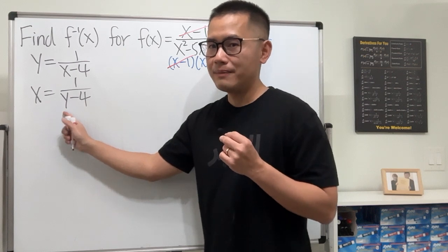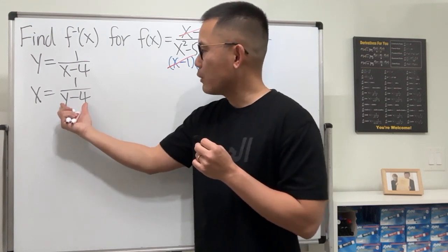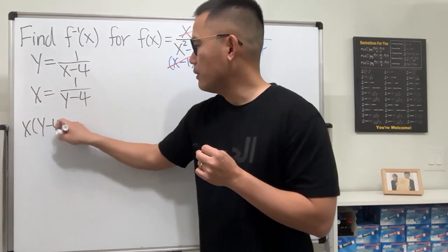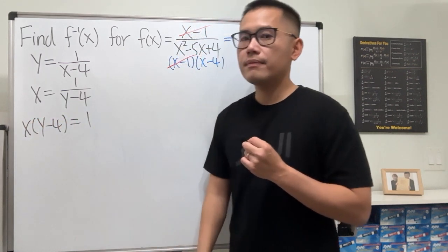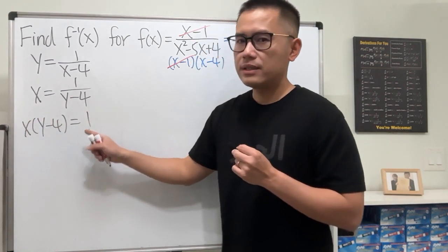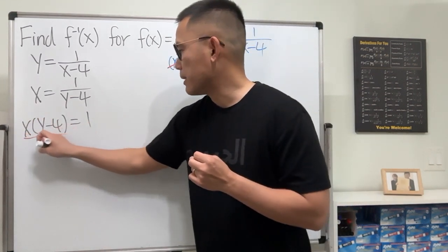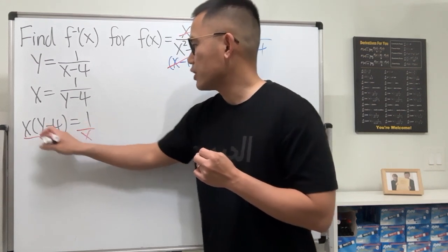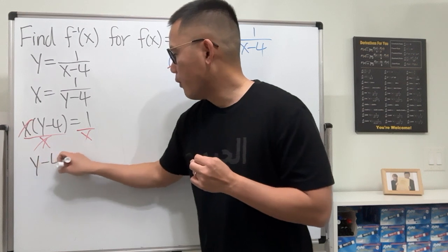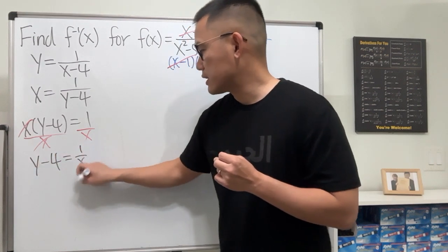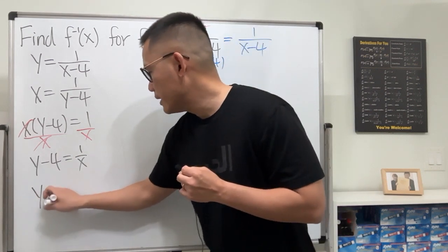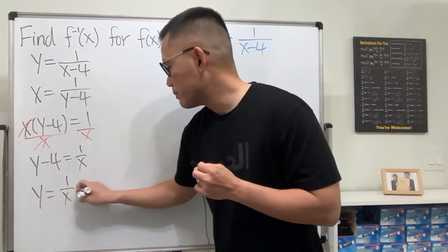Step three: solve for the new y. Multiply (y minus 4) to both sides, so x times (y minus 4) equals 1. Divide both sides by x — y minus 4 equals 1 over x. Then add 4 to both sides: y equals 1 over x plus 4.